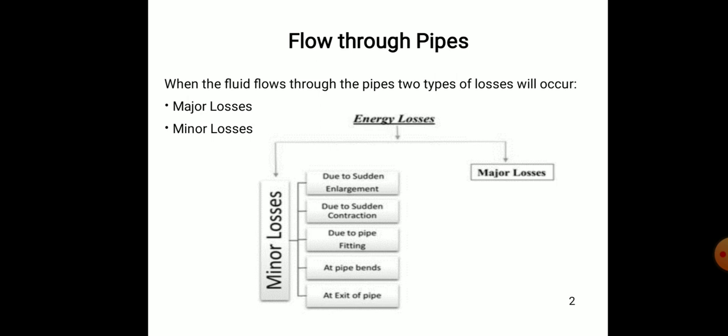Minor losses are small losses which occur due to bends or valves that disrupt smooth steady flow. The loss due to friction in major losses can be solved by two equations: one is Darcy's formula and second is Chezy's formula. Minor losses occur due to sudden enlargement, sudden contraction, pipe fittings at pipe bends, and at the exit of the pipe.